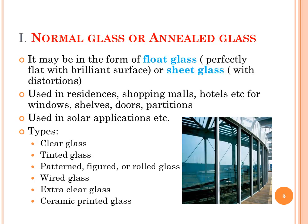Firstly, let's see what is normal glass or annealed glass. It is in the form of float glass which is perfectly flat with a brilliant surface, or sheet glass with distortions. It is mainly used in residences, shopping malls, hotels, etc., for windows, shelves, doors, partitions, etc. It is also used for solar applications.